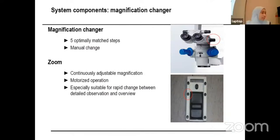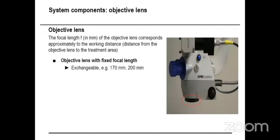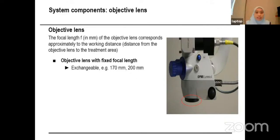The magnification changer typically has five optimally matched steps that can be changed manually, and the zoom is controlled by the foot pedal, which provides continuously adjustable magnification. For the objective lens, the focal length corresponds approximately to the working distance — that is, the distance from the objective lens to the treatment area. Objective lenses have a fixed focal length, usually either 170 or 200 mm.